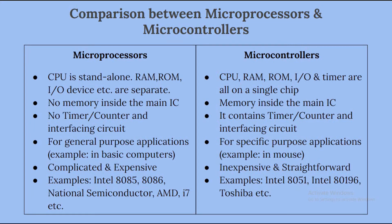These are the basic differences between a microprocessor and a microcontroller. Examples of microprocessors include Intel 8085, 8086, National Semiconductor, AMD, i7, etc. Examples of microcontrollers include Intel 8051, Intel 80196, Toshiba, etc.